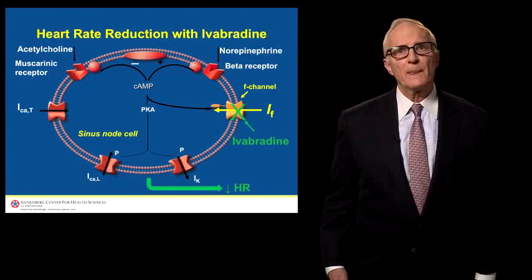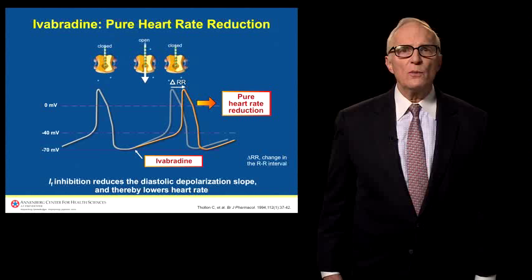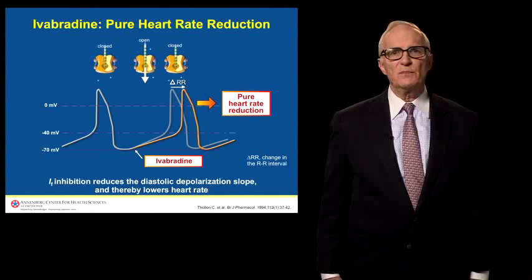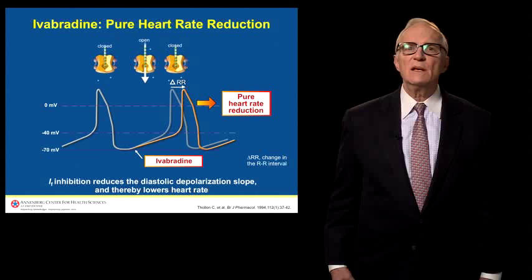Ivabradine works by blocking the F channel, and therefore blocking the F current. When the channel is open, the F current can develop and the spontaneous diastolic depolarization occurs as it normally would. When the channel is blocked by Ivabradine, the F current is cut off, and the result is a diminution in the slope of diastolic depolarization and a diminution in heart rate.